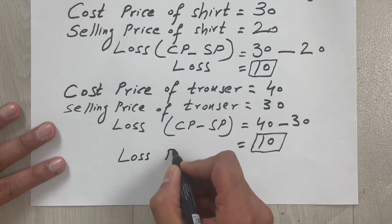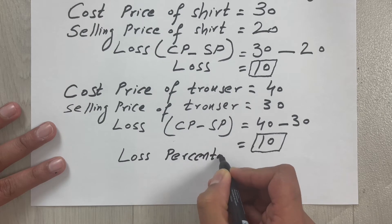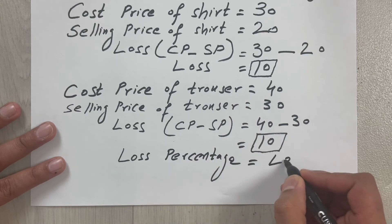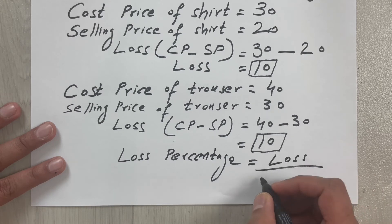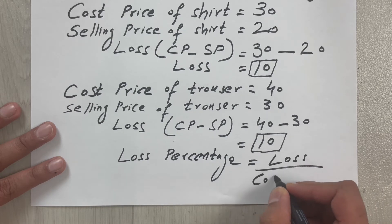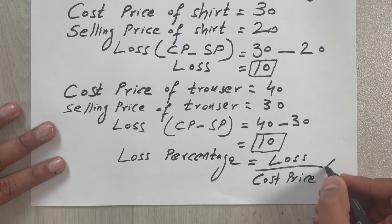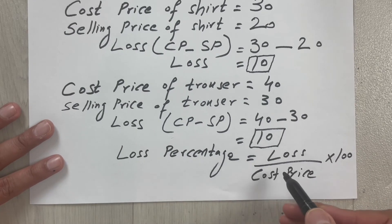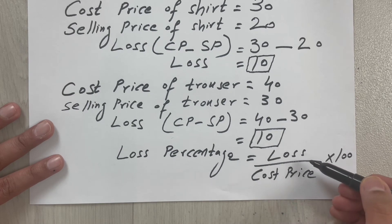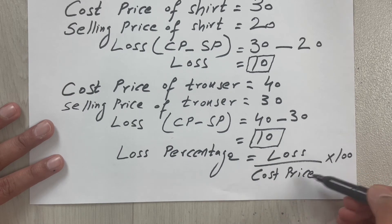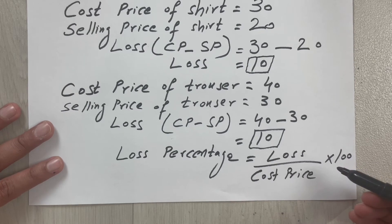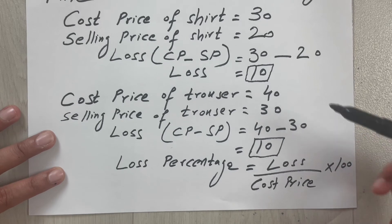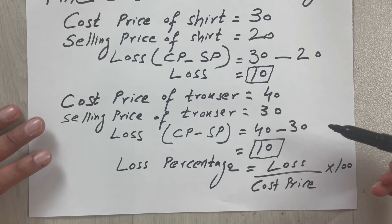The formula for loss percentage is: Loss Percentage equals Loss divided by Cost Price, multiplied by 100. So: Loss / CP × 100. We will now put the values for each of these deals to find out which deal made a bigger loss.